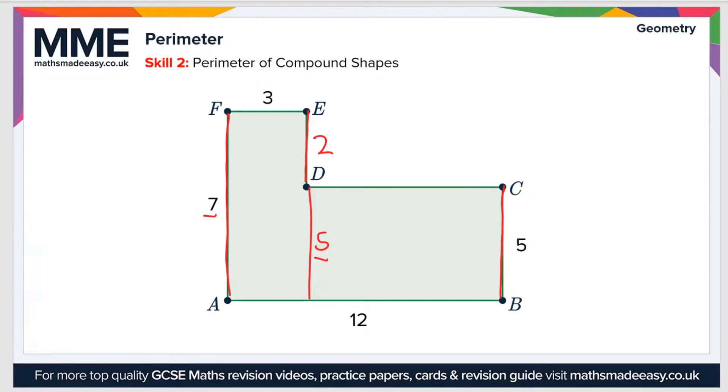We'll change colour now to make it clear. We also need to work out this side here, D to C. We'll use the same logic. A to B is 12 and F to E is 3, so D to C therefore is 12 minus 3, which equals 9. So the perimeter is therefore the sum of all these sides, which is 3 plus 9 plus 5 plus 12 plus 7, and that gives us a value of 38.